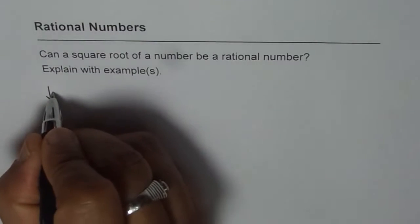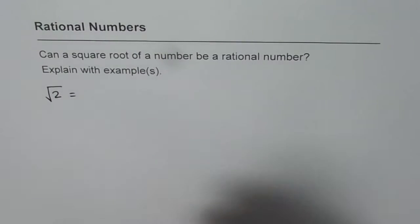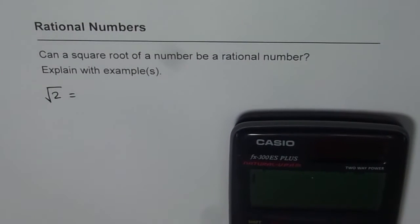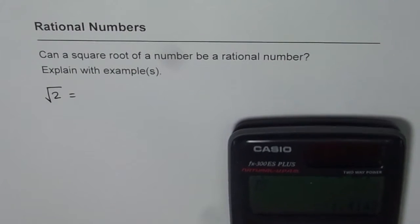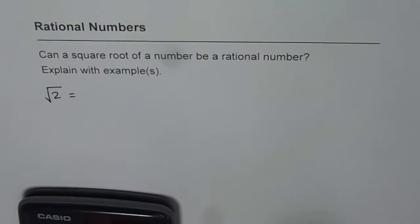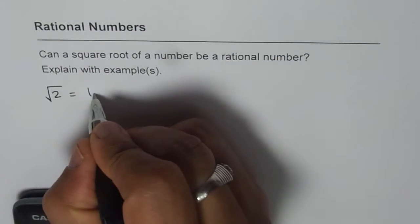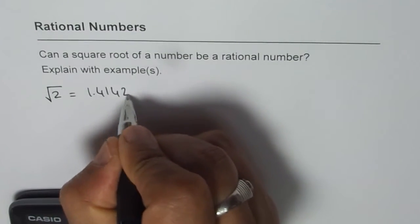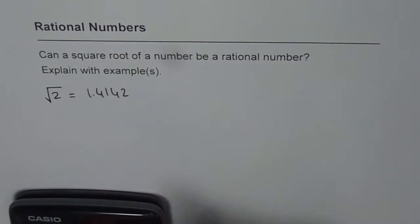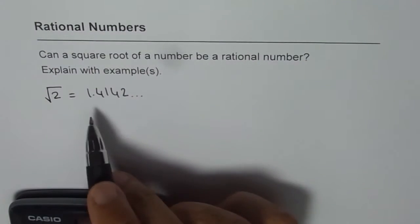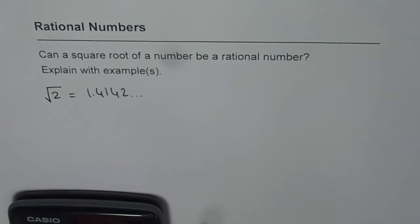So let us take some examples. Let us say what is square root of 2. Now using calculator, we can find the value of square root of 2. Square root of 2 is equal to 1.4142. I am just checking 4 decimal places, but it goes on and on and the numbers really do not repeat.